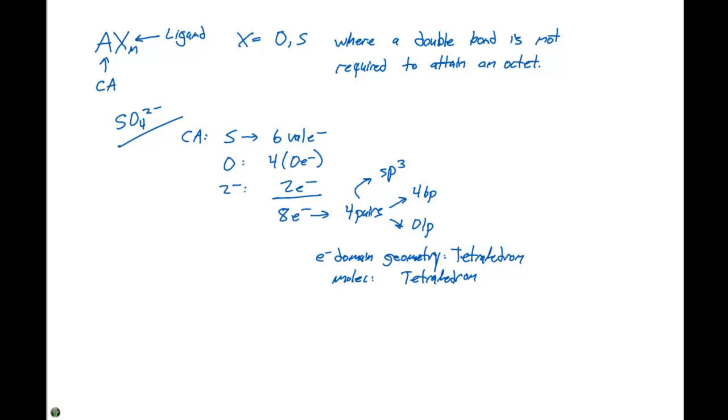So let's go ahead and start putting these oxygens around the sulfur. Again, we're going to put brackets around this because we have a 2- charge. So in this case, there's going to be no requirement of a double bond to reach the octet.